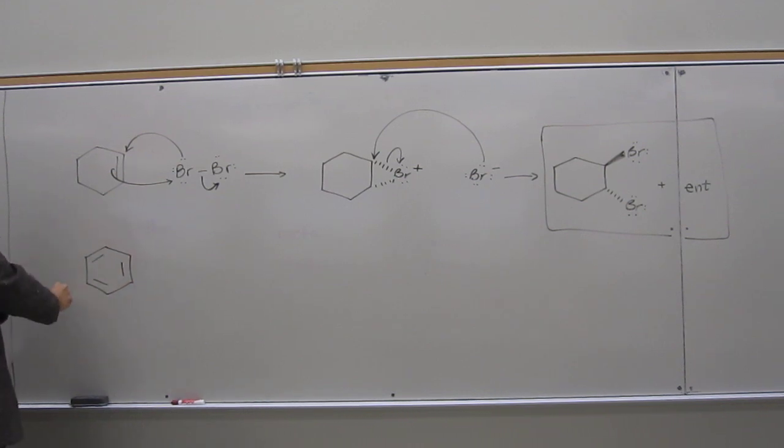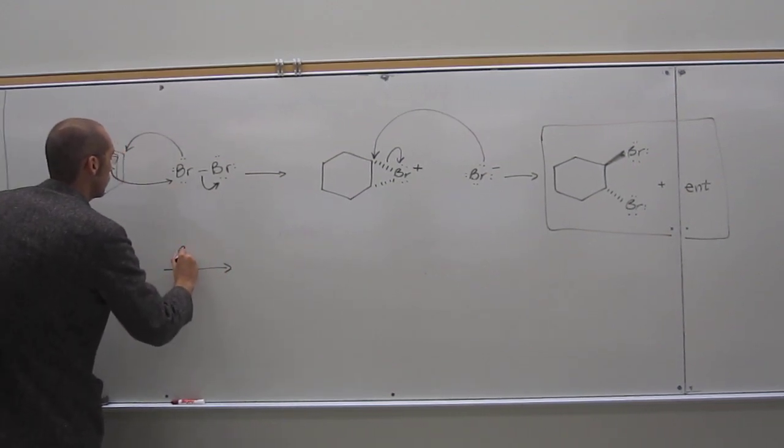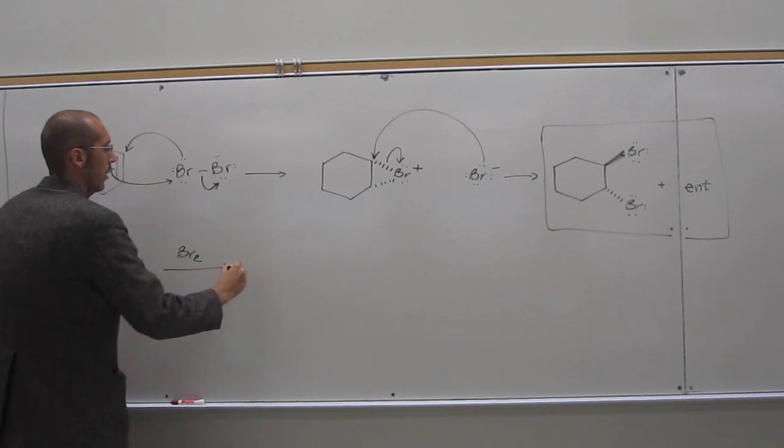So hexabromide, right? But what happens when we react this with Br2? No reaction. Why? Because it's super stable, okay?